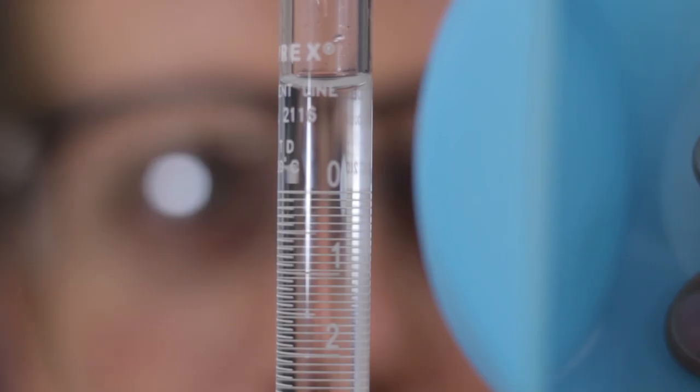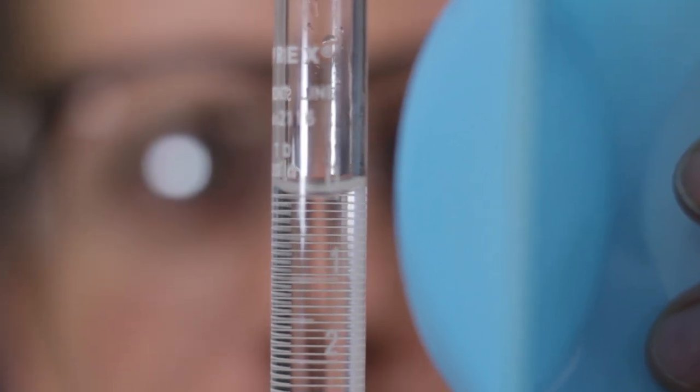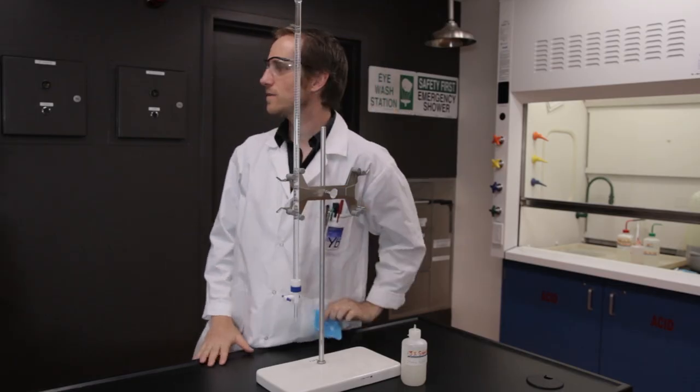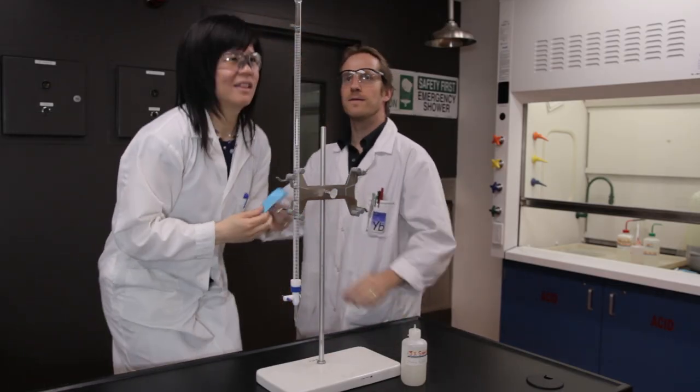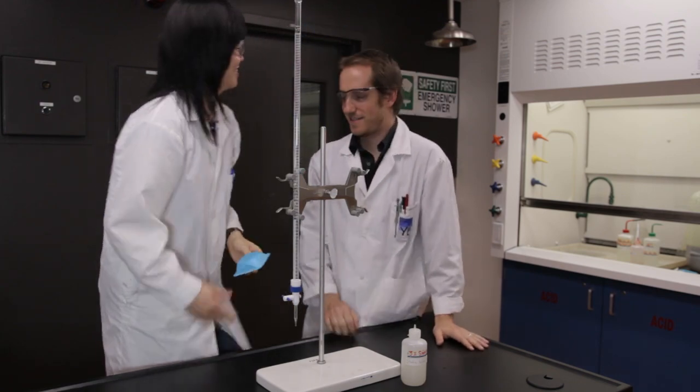Drain the burette so that the bottom of the meniscus is at the zero mark. Be sure to read the meniscus at eye level. Record the initial reading of the burette to two decimal places. The reading should be based on the bottom of the meniscus.